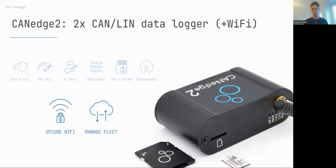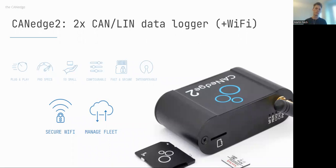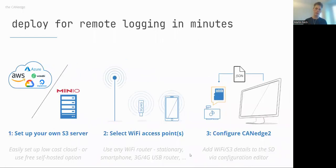If you don't want to manually collect data from your vehicles, the CAN Edge 2 is a powerful tool. It's essentially like the CAN Edge 1 but allows you to automatically offload recorded log files to your own server via Wi-Fi, securely and with over-the-air firmware and configuration updates. To set it up, the first step is setting up your own server — CSS Electronics does not host the server for you.